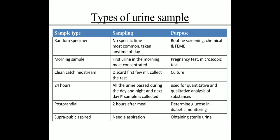What are the types of urine samples? For routine screening, chemical examination, and FEME — full examination microscopy examination — we take a random specimen. Sampling is done with no specific time; it is the most common sample type and can be taken any time of the day. The second type is the morning sample, taken as the first urine in the morning when it is most concentrated, used to test pregnancy and for microscopic tests.